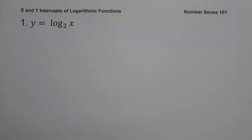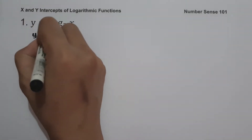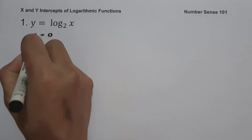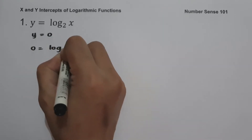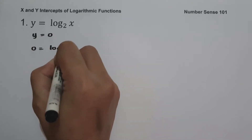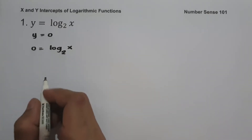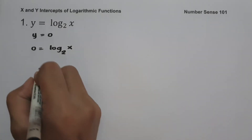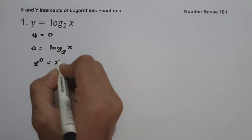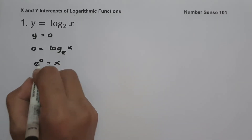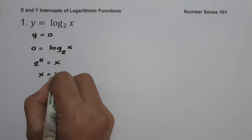To find the value of the x-intercept, let us set y equal to 0. So we have 0 equals log x base 2. Let us write this in exponential form. So this will be 2 raised to 0 equals x. 2 raised to 0 is 1, so x equals 1.